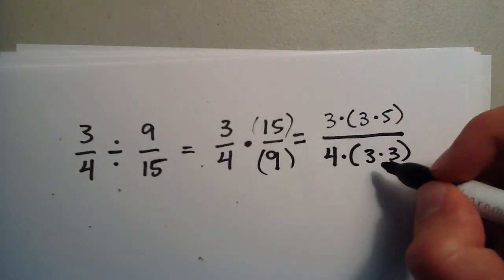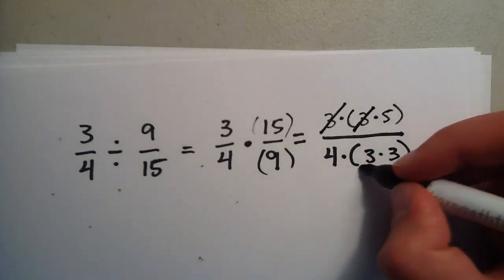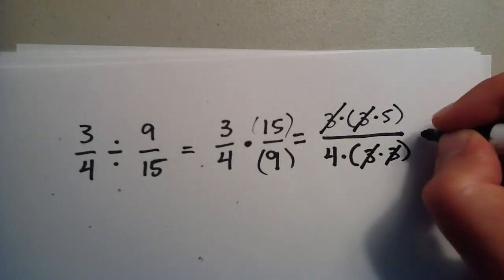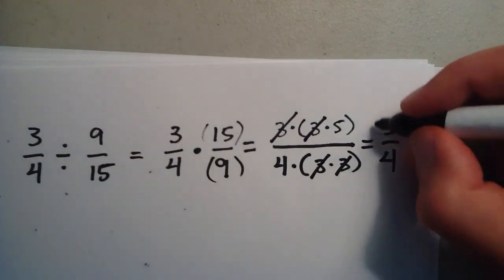So now we have two 3's on the top and two 3's on the bottom. The two 3's will cancel with each other, and we're left with 5 over 4. So that's your answer.